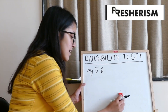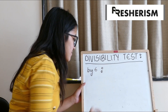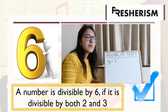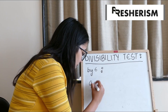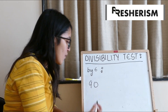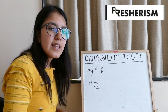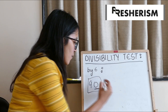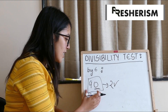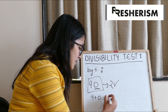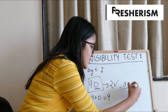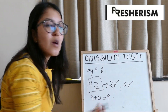Next, divisibility test by 6. Any number which will be divisible by both 2 and 3 will be divisible by 6 as well. Let us take an example: 90. For 2, we know that at units place it's 0, which is an even number. Hence, 90 is divisible by 2 — check. For 3, if we sum up the digits, it's 9 plus 0, which is 9, which is divisible by 3 — check. Hence, 90 will also be divisible by 6.